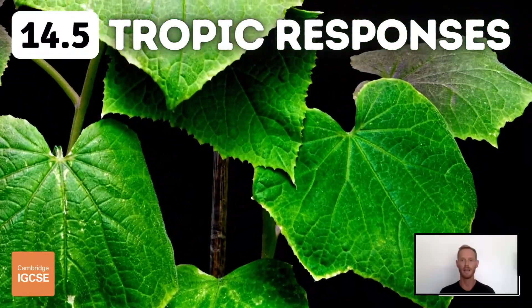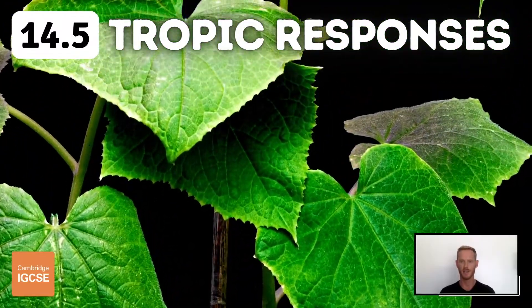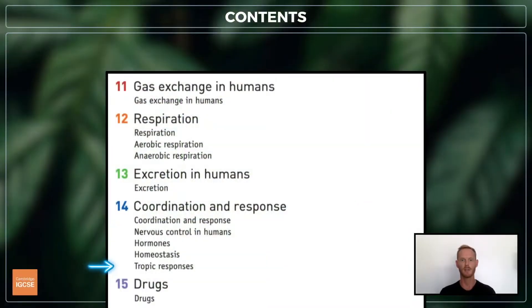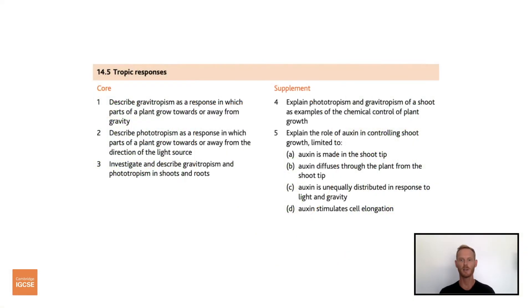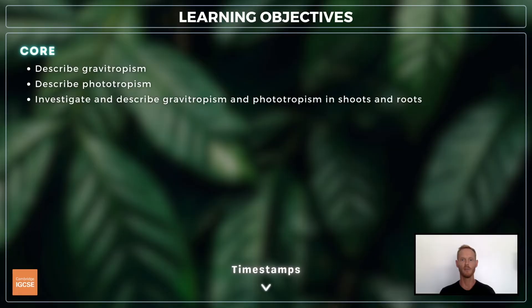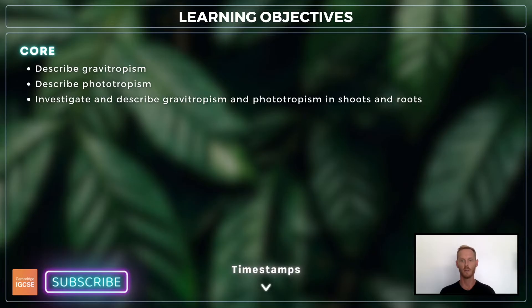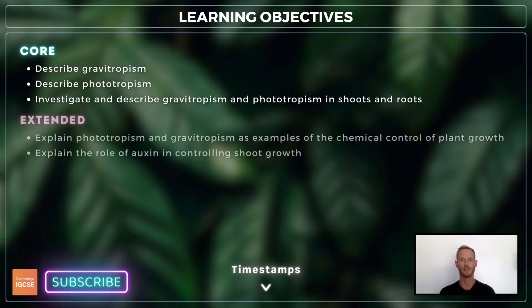Hello and welcome to another complete Cambridge IGCSE biology lesson where you'll learn absolutely everything you need to know on topic 14.5: tropic responses. We'll be following the Cambridge syllabus exactly. For topic 14.5 you need to describe gravitropism and phototropism and investigate gravitropism and phototropism in shoots and roots. For extended, you also need to explain the role of the chemical auxin in controlling shoot growth.